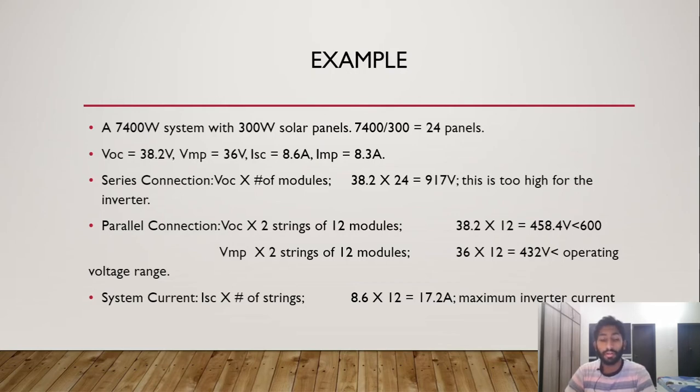For a parallel connection with two strings of 12 modules each string, you multiply Voc with 12, so Voc is 38.2 times 12 modules equals 458.4 volts in one string. You have to check that with the maximum input voltage for the DC inverter - in our case I've chosen 600 volts, so that's less than 600 volts, so that will meet and that will work.